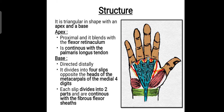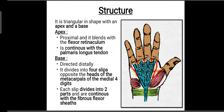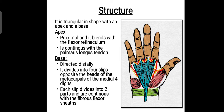The base is directed distally and it divides into four slips. Looking closer, you can see it is divided into four slips at the end — one, two, three and four — counted from the lateral aspect, that is from the thumb side. There are four slips arising opposite to the heads of the metacarpals of the medial four digits. The head of the metacarpal is located in the palmar region, and at that level the palmar aponeurosis divides into four different slips.